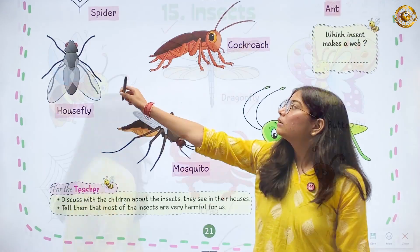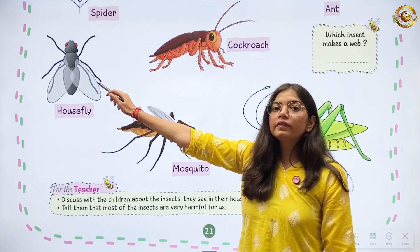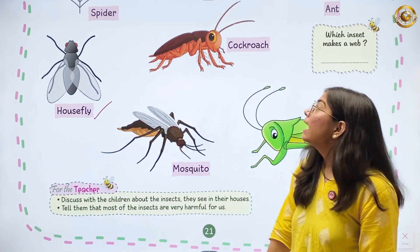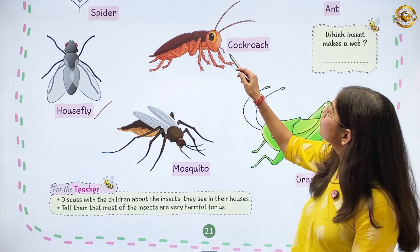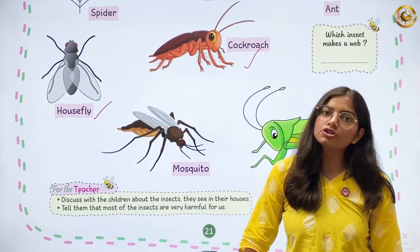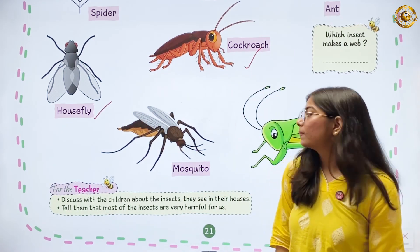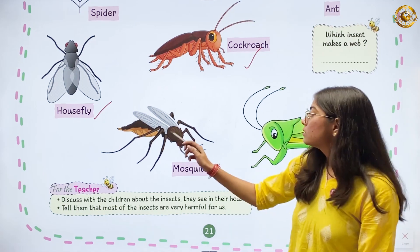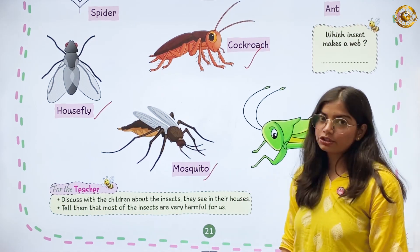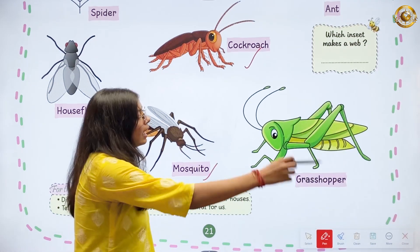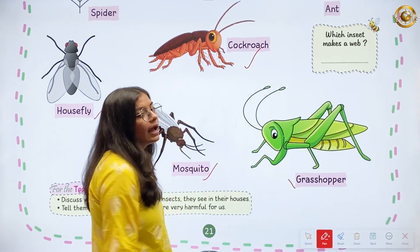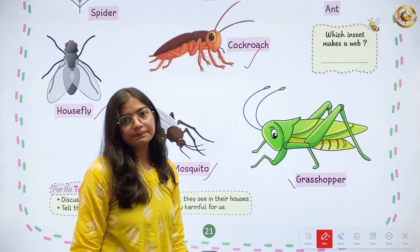This one is a housefly. And this one is a cockroach. This one is a mosquito. And this one is a grasshopper.